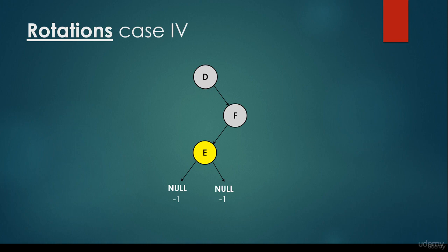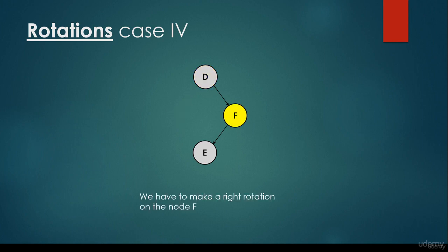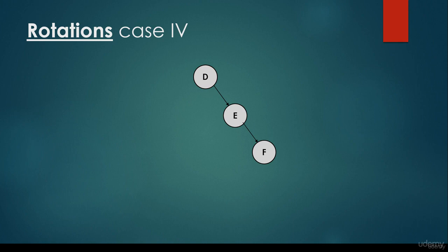Checking whether the AVL properties are violated: the difference between the height parameters of node F's children is 0. For node D, the height parameter is minus 1 on the left and 1 on the right, so we definitely have to make a rotation. First we rotate F to the right, then it becomes the doubly right-heavy situation, so we rotate the root node D to the left. This is how we end up with a balanced situation.